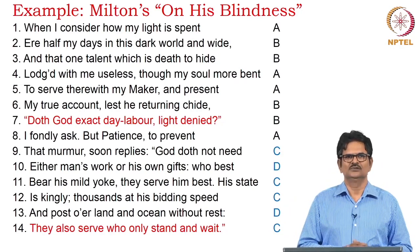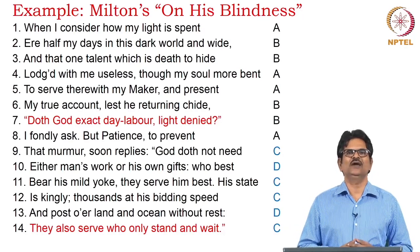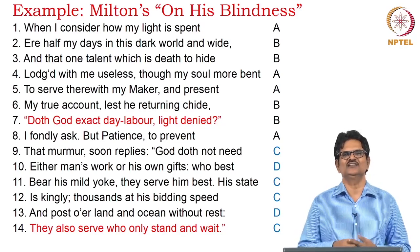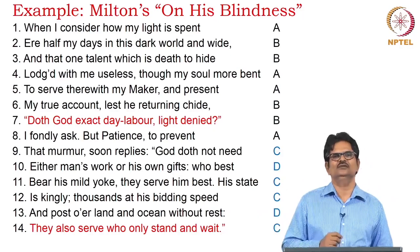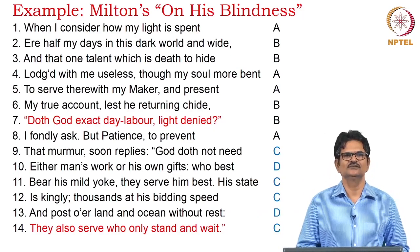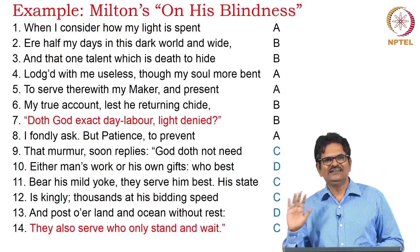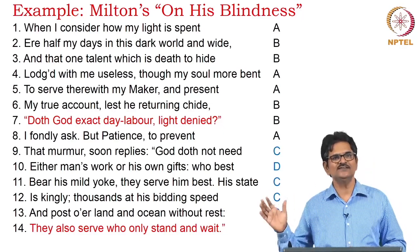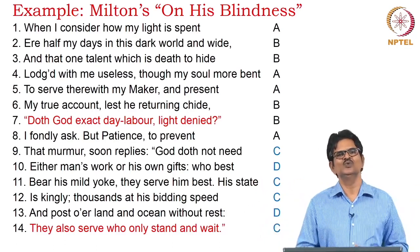Let's look at this example: John Milton's 'On His Blindness.' It's a well-known poem. Here we have the poem and also the rhyme scheme: 'When I consider how my light is spent, or half my days in this dark world and wide, and that one talent which is death to hide, lodged with me useless, though my soul more bend to serve therewith my maker and present my true account, lest the returning child — doth God exact day labour, light denied? I fondly ask, but patience to prevent that murmur soon replies, God doth not need either man's work or his own gifts. Who best bear his mild yoke, they serve him best. His state is kingly, thousands at his bidding speed and post over land and ocean without rest. They also serve who only stand and wait.'